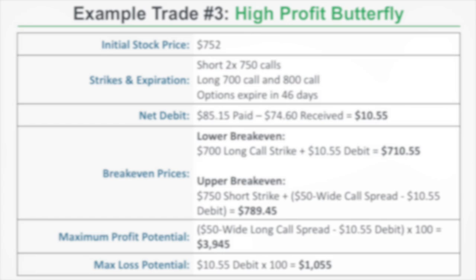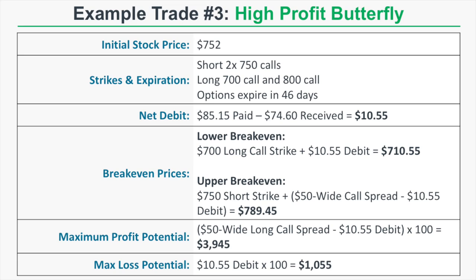Example trade number three: a high-profit butterfly. The initial stock price is $752. We buy the 700/750 call spread and sell the 750/800 call spread, with all options expiring in 46 days. Net debit is $10.55. Lower break-even is $710.55, upper break-even is $789.45. Maximum profit potential is the $50 spread width minus $10.55 debit times 100, which equals $3,945. Maximum loss is $1,055.